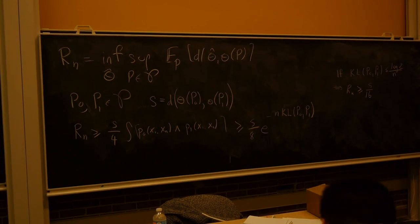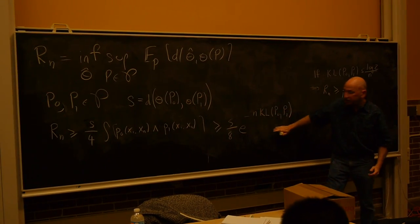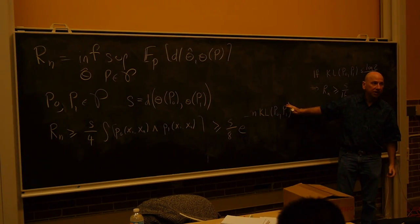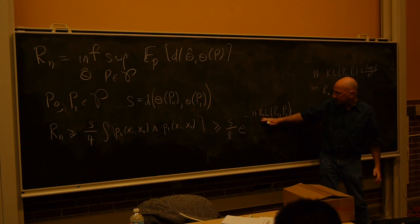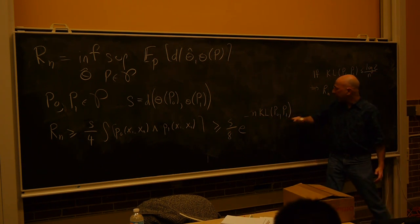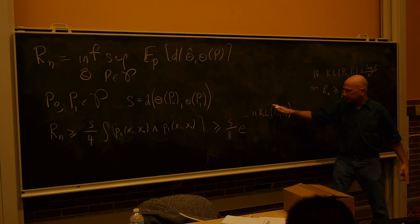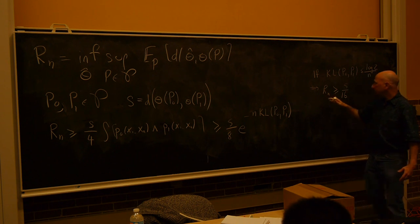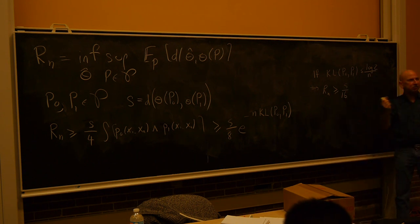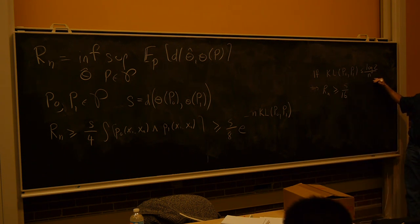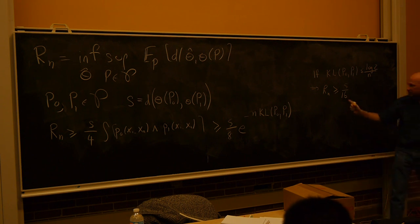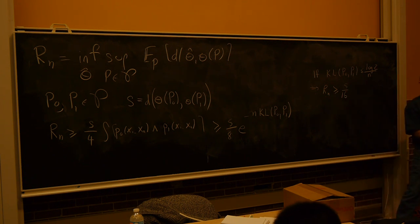The trick here is to try to make sure this term doesn't go to 0 — we want to keep the risk bounded away from 0 to get a good lower bound. So if we set this to be like 1 over n, I picked here log 2 over n, and plug it in, then this becomes like a half. And so you're done. You pick two distributions that satisfy this condition, you compute the distance between their parameter values s, and you have a lower bound for the risk.